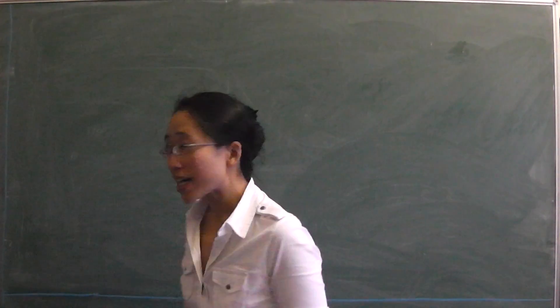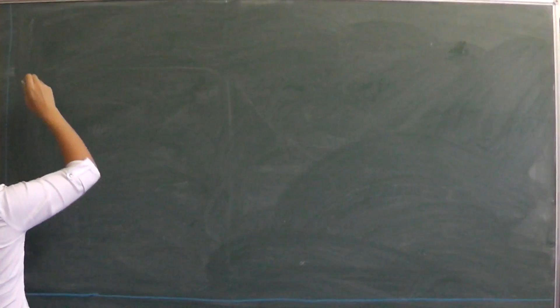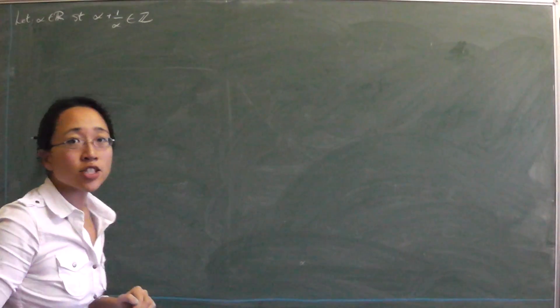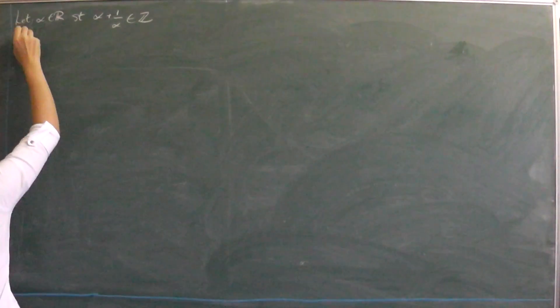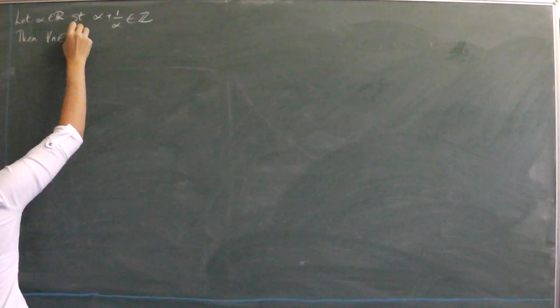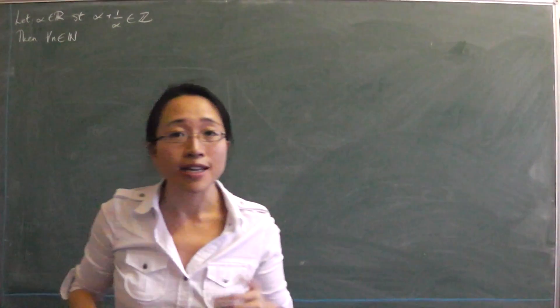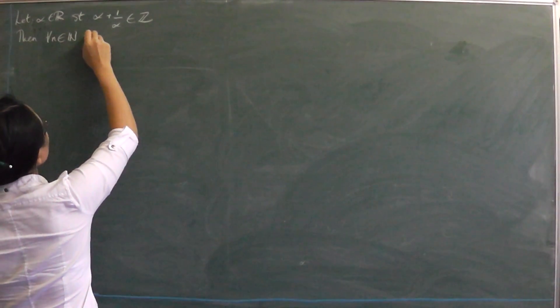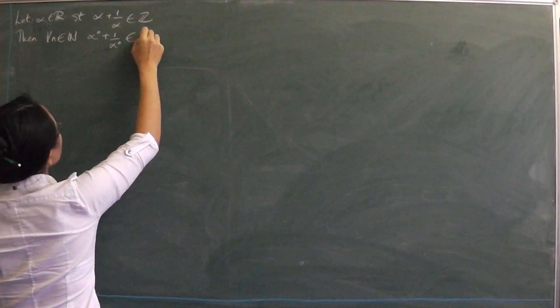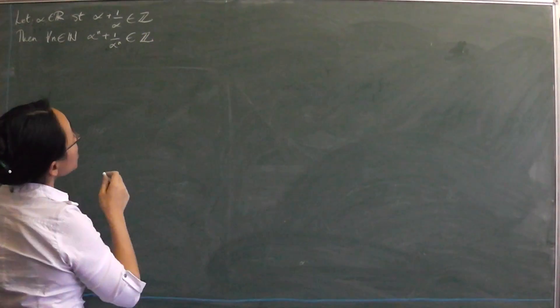Today I'm going to do another proof by induction. I'm going to prove the following result: let alpha be any real number such that alpha plus 1 over alpha is an integer. What I'm going to prove is that in that case, for all natural numbers n, alpha to the n plus 1 over alpha to the n is also an integer.